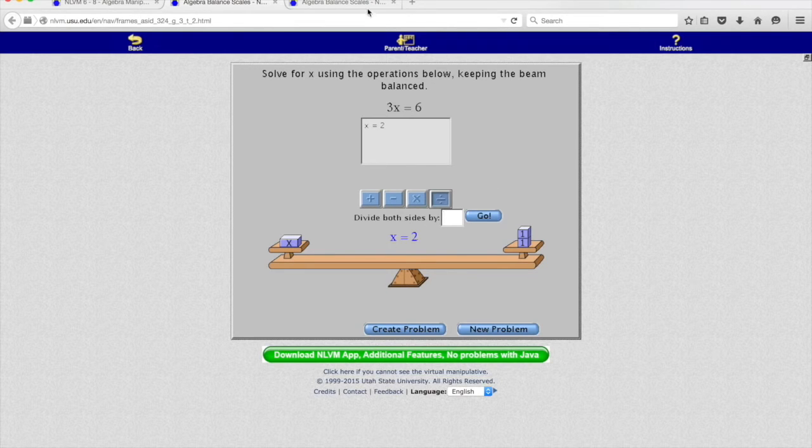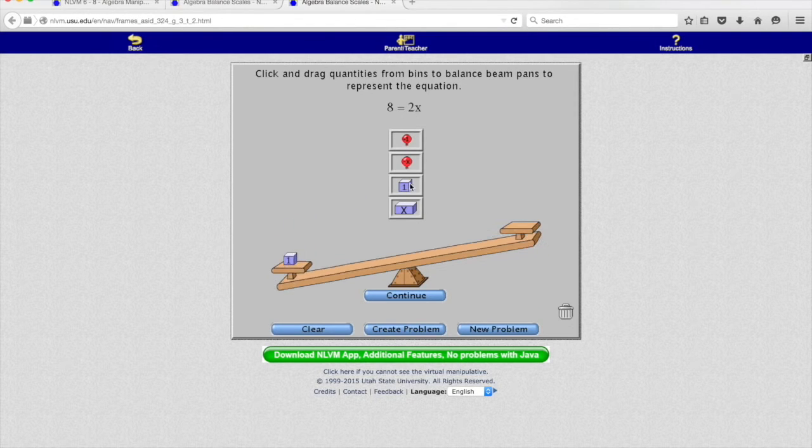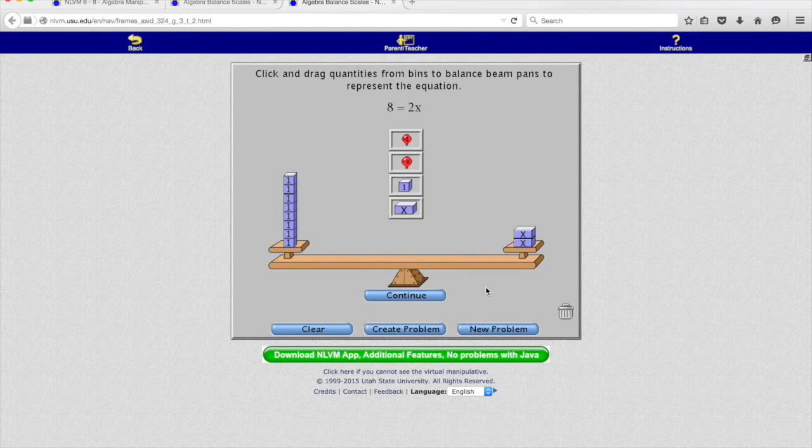Let's take a look at another problem. Here's another one, eight equals two x. So if I drag out my eight tiles, and then two x's, my scale balances. But I want to figure this out where instead of two x's, I only have a single x.